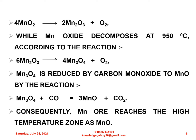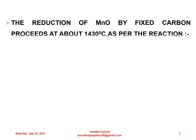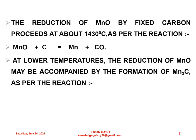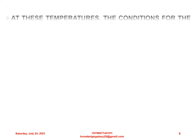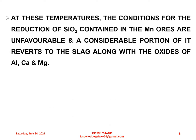Consequently, manganese ores reach the high temperature zone as MnO. The reduction of MnO by fixed carbon proceeds at about 1430°C as per the reaction: MnO + C → Mn + CO. At lower temperatures, the reduction of MnO may be accompanied by the formation of Mn₃C: 3MnO + 4C → Mn₃C + 3CO. Mn₃C obtained is reverted to the alloy as its melting point is approximately 1250°C. At these temperatures, the conditions for the reduction of SiO₂ contained in the manganese ores are unfavorable, and a considerable portion of it reverts to the slag along with the oxides of aluminum, calcium, and magnesium.